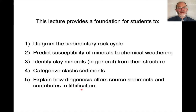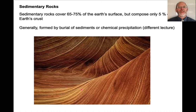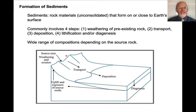Sedimentary rocks cover a large portion of Earth's surface, although it's a tiny fraction of Earth's crust, and they're generally formed by burial of sediments — clastic sediments — or chemical precipitation. I'm not going to talk about chemical precipitation in this lecture; that will be a subsequent lecture. The basic process is that you start with a source region which is weathered and eroded, that material is transported downslope and deposited, the sediment undergoes diagenesis to form a sedimentary rock, and those rocks can be uplifted and exposed to start the cycle all over again.